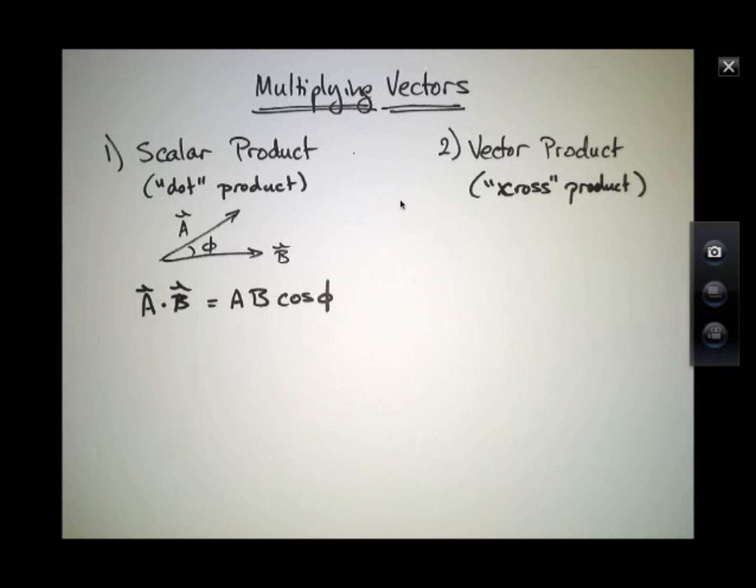So it doesn't produce a new vector or anything, which is a little bit different than traditional multiplication. If I multiply two integers together, I get another integer. This kind of multiplication, I take the dot product of two vectors and I get back a scalar quantity.